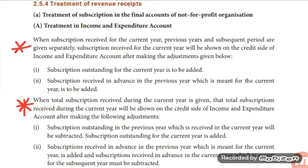When total subscription received during the current year is given, that total will be shown on the credit side of the income and expenditure account, and the following adjustments are made: subscription outstanding in the previous year which is received in the current year will be subtracted; subscription outstanding for the current year is added; subscription received in advance in the previous year meant for the current year is added; and subscription received in advance in the current year meant for the subsequent year must be subtracted.